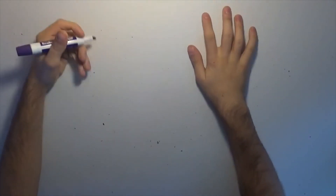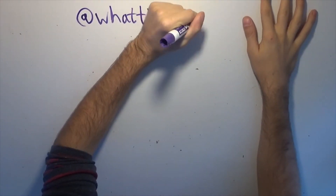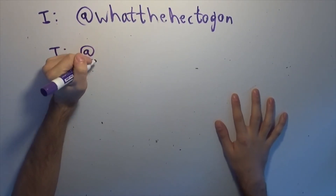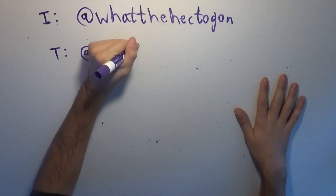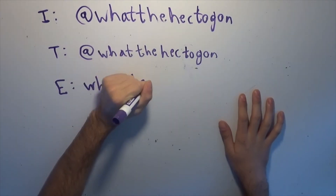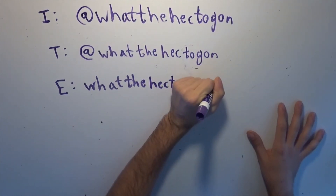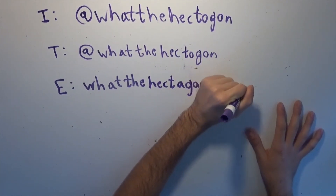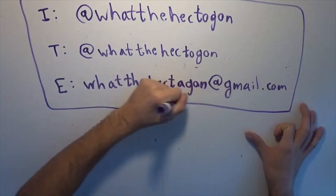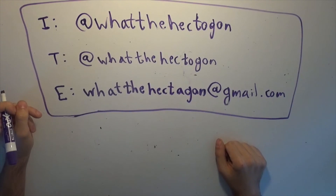Quick little thing: this channel has an Instagram at whatthehectagon, and a Twitter also at whatthehectagon. My email is the incorrectly spelled whatthehectagon at gmail.com — apparently I didn't spell check before making the email. All of these are in the description. Thank you for watching.